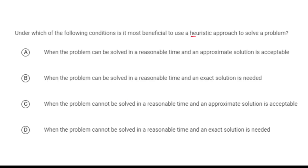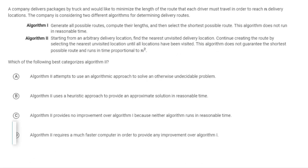Which is the most beneficial use of a heuristic? If you can solve a problem in reasonable time, you're unlikely to need a heuristic. If you need an exact solution, you cannot use a heuristic — heuristics are non-exact solutions. The best use is when a problem cannot be solved in reasonable time and an approximate solution is acceptable. If you need an exact solution to an unreasonable-time problem, unfortunately you simply cannot solve it well.